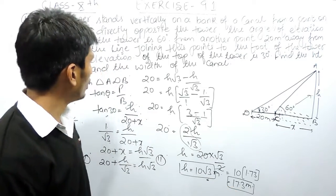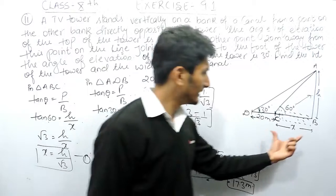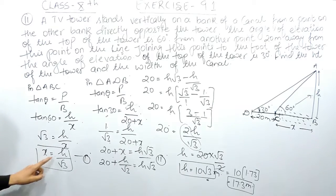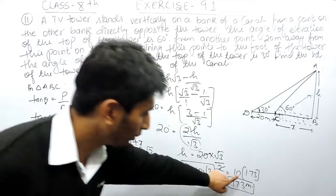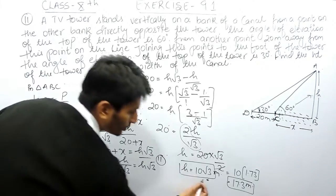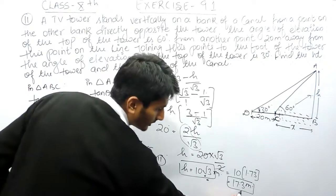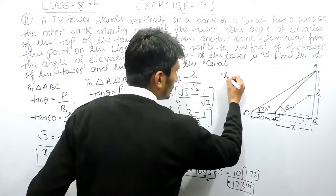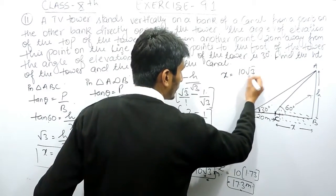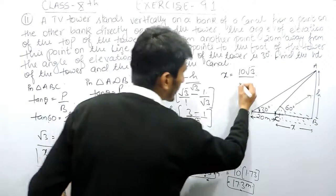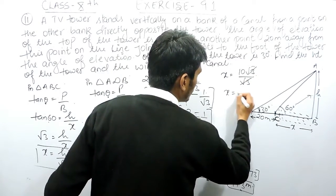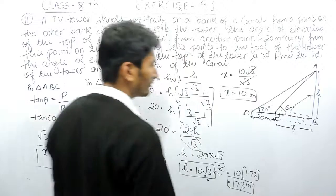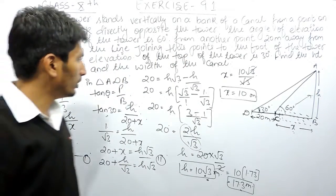Now we also need to find the width of the canal, which is x. Substituting h = 10√3 into the first equation x = h/√3: x = 10√3/√3. The √3 cancels, giving x = 10 meters. So the width of the canal is 10 meters.